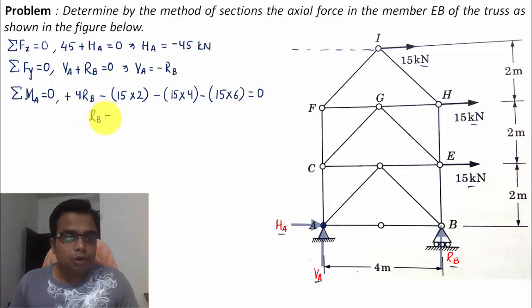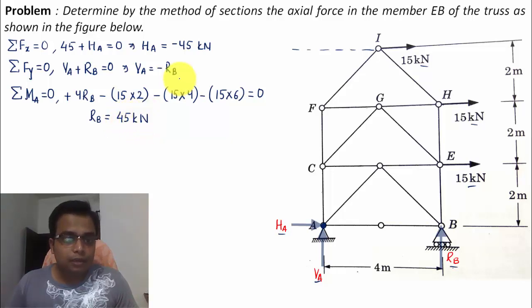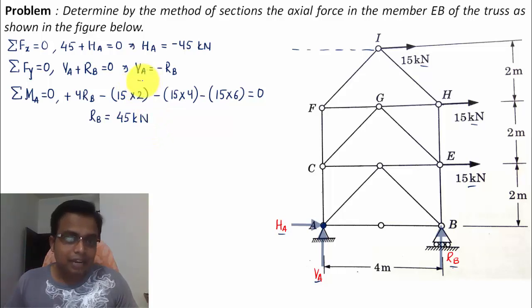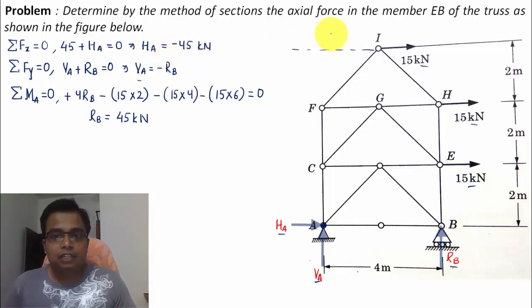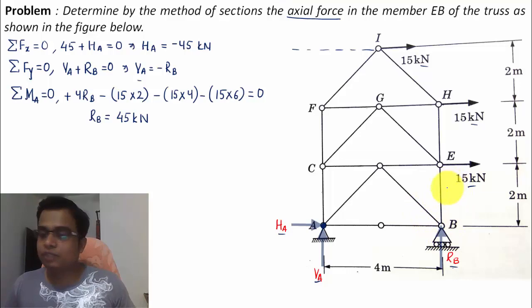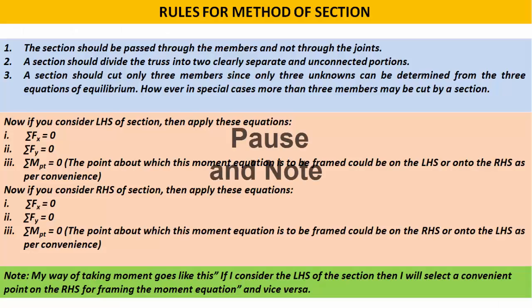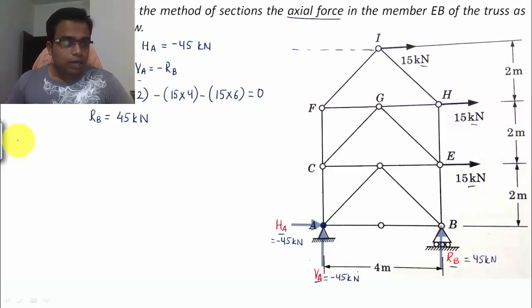Solving that equation gives RB equal to 45 kilonewtons. With the value of RB we also have VA in the negative, and we have HA. In the next step we'll go ahead and use the method of sections to find the axial force in member EB of the truss.